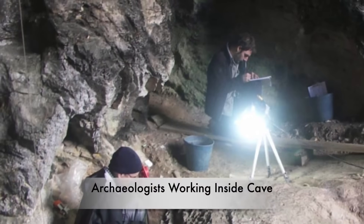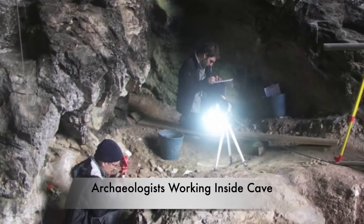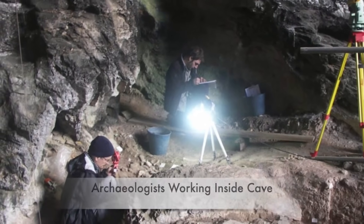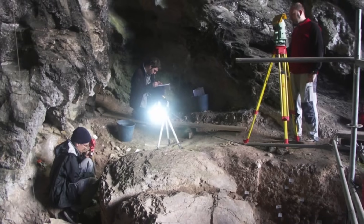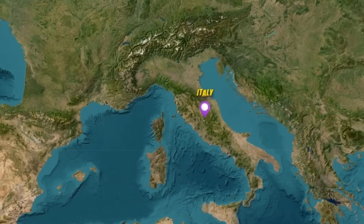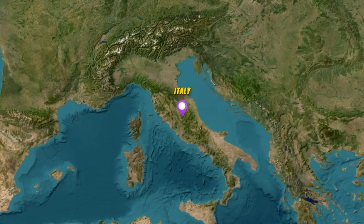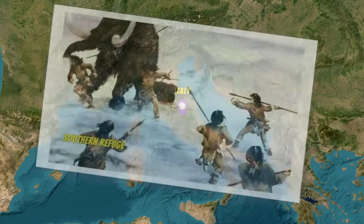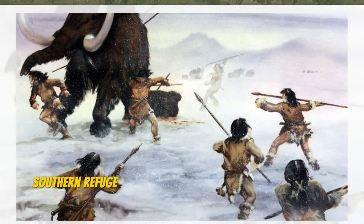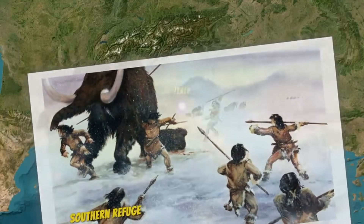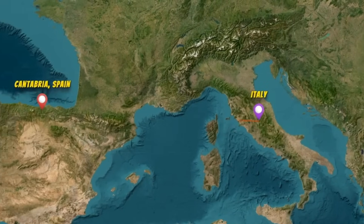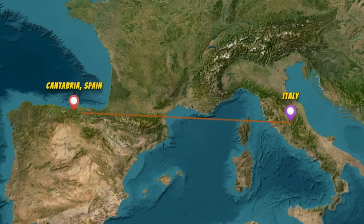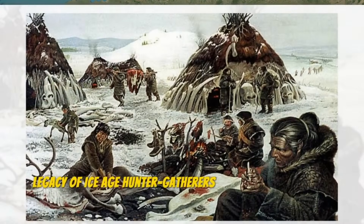Following the last glacial maximum, a major demographic shift occurred across Europe, potentially explaining the disappearance of the El Miron genetic signature. As ice sheets retreated northward, human populations expanded from southern refugia, potentially leading to competitive displacement or absorption of groups like those represented by El Miron. Furthermore, genetic drift in small isolated populations may have further contributed to the loss of distinctive Magdalenian genetic markers.